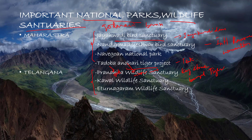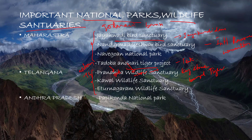In Telangana, there is the Pranahita Wildlife Sanctuary and Kawal Wildlife Sanctuary in northern Telangana, around the Godavari basin. In Andhra Pradesh, there is the Papikondalu National Park, which may be submerged once the Polavaram Irrigation Project is completed.